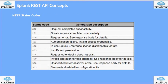Some of the HTTP status codes we should be familiar with: 200 — request completed successfully; 201 — create request completed successfully; 400 — error, response body contains details; 401 — authentication failure; 402 — in the new Splunk Enterprise license, feature disabled; 403 — no permission.